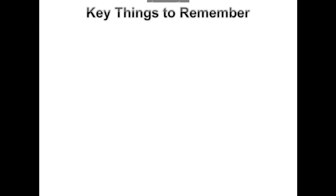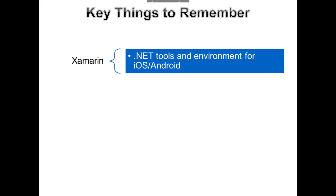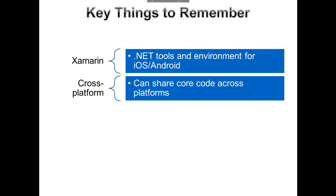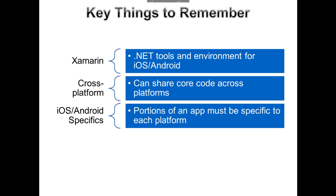I want to make sure I leave time for questions, so let me wrap up with key things to remember. If you have questions, type them in the chat window or send them via Twitter with hashtag PluralsightLive. Key takeaway: Xamarin is .NET tools and an environment for iOS and Android. It lets you write real .NET — providing real .NET types and writing real .NET code — but you're also writing real iOS code and real Android code. When it comes to cross-platform code, you really can share code across platforms including Windows Phone, ASP.NET, and Desktop .NET, as long as it's not tied to UI and platform-specific services. Data validation and business logic share really well.